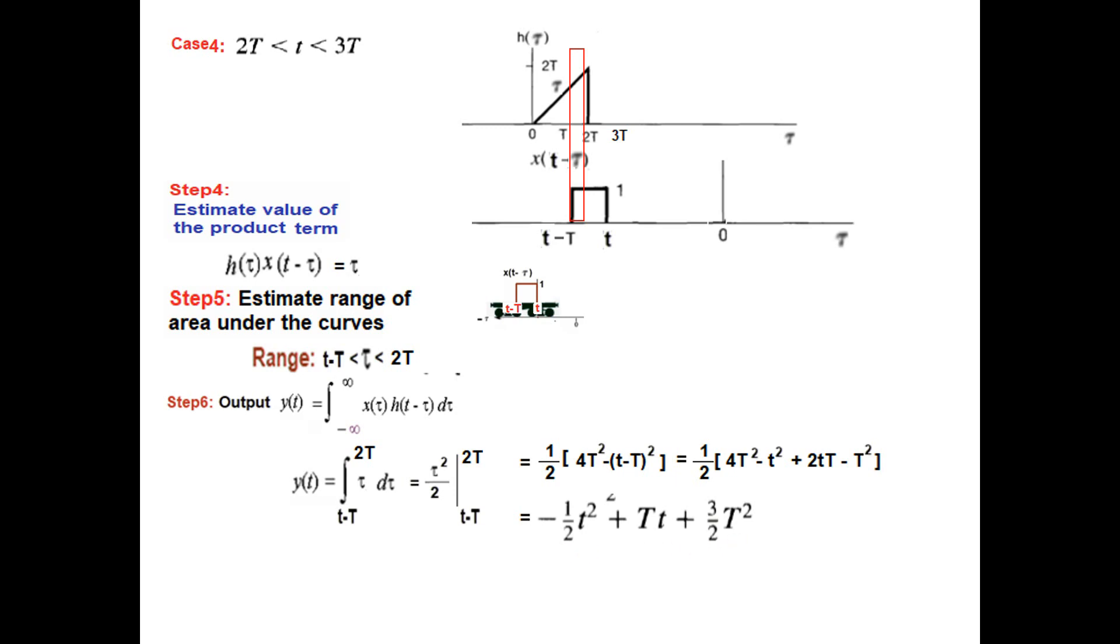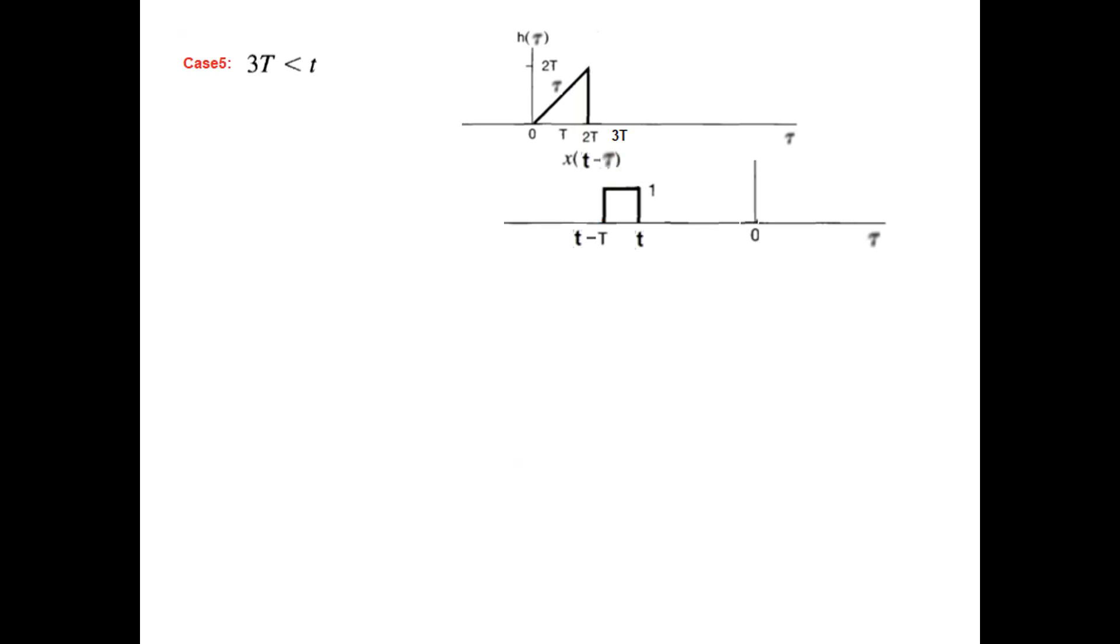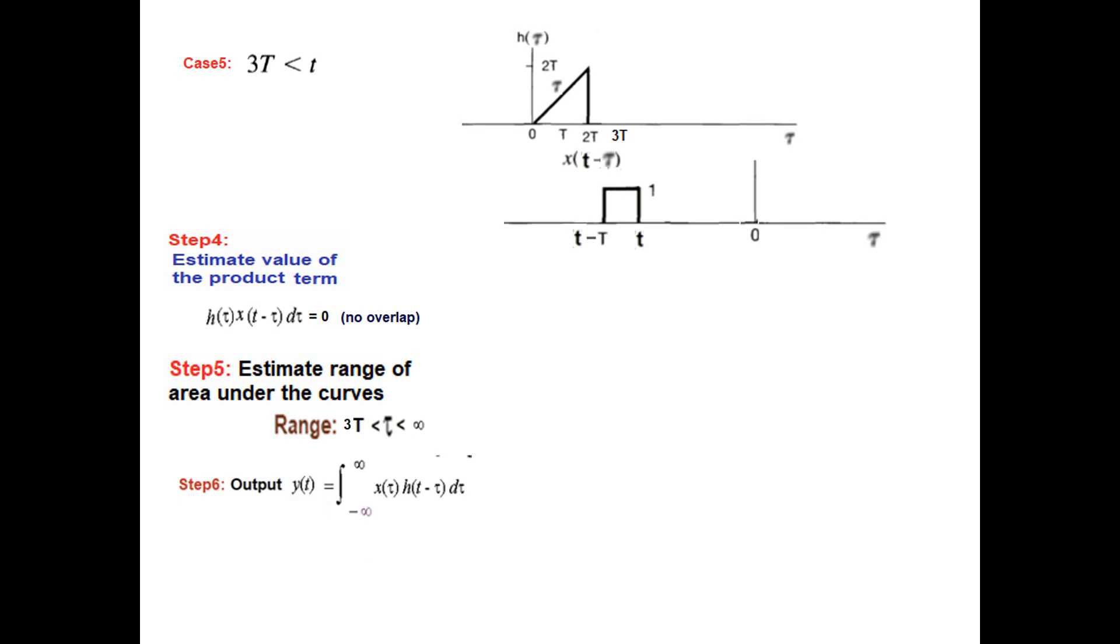One more pull. The moment T goes beyond 3T, there is no overlap. So output will be 0. This I have some doubt whether you should write it from 3T to infinity or we should write just no range. But anyway, since multiplication is 0, therefore the output will be 0.